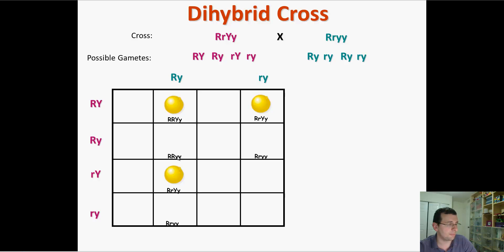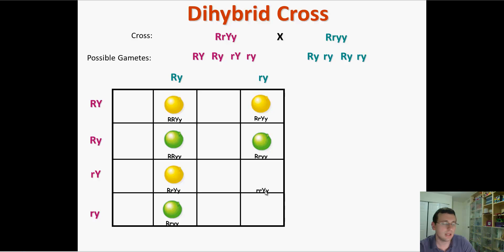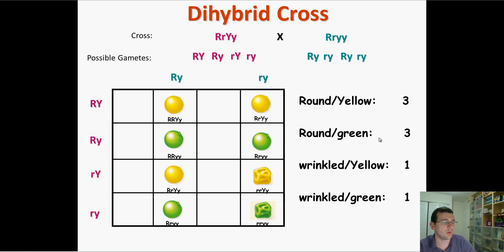Three combinations are dominant for the first trait but recessive for the second — that gives round and green peas. Then one combination is recessive for the first trait but dominant for the second, giving wrinkled and yellow. Finally, little r with little y gives recessive for both — wrinkled and green. So the ratio is three round-yellow, three round-green, one wrinkled-yellow, and one wrinkled-green.